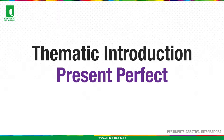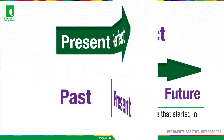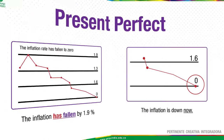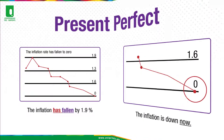Present Perfect connects the past with the present. We use Present Perfect to talk about an action that started in the past with a result now. For example: The inflation has fallen by 1.9%. The inflation is down now.